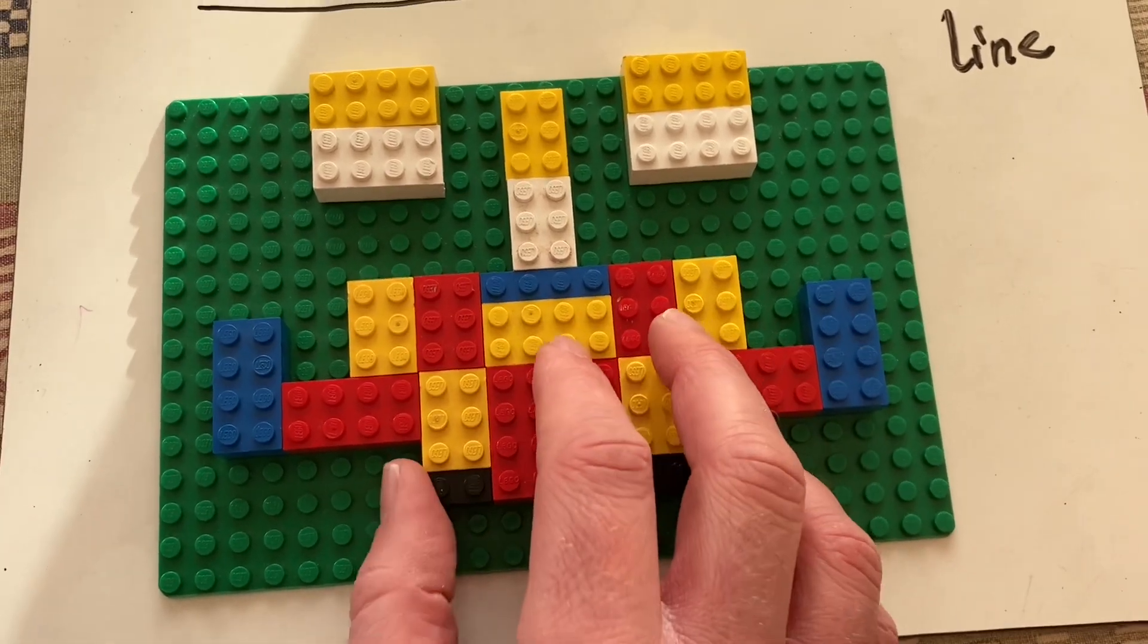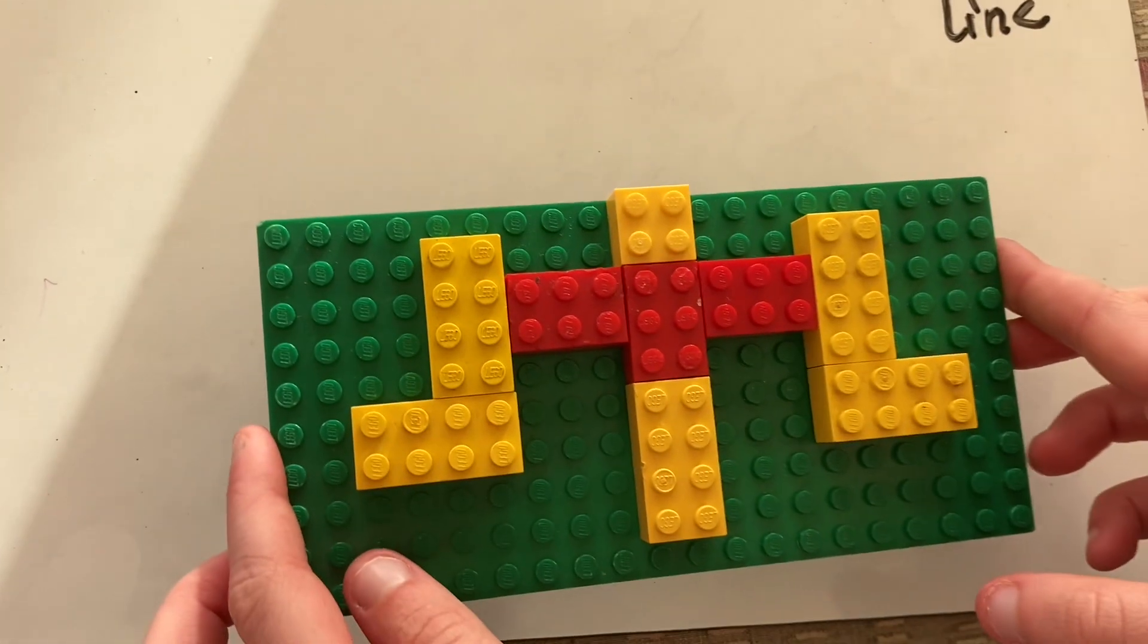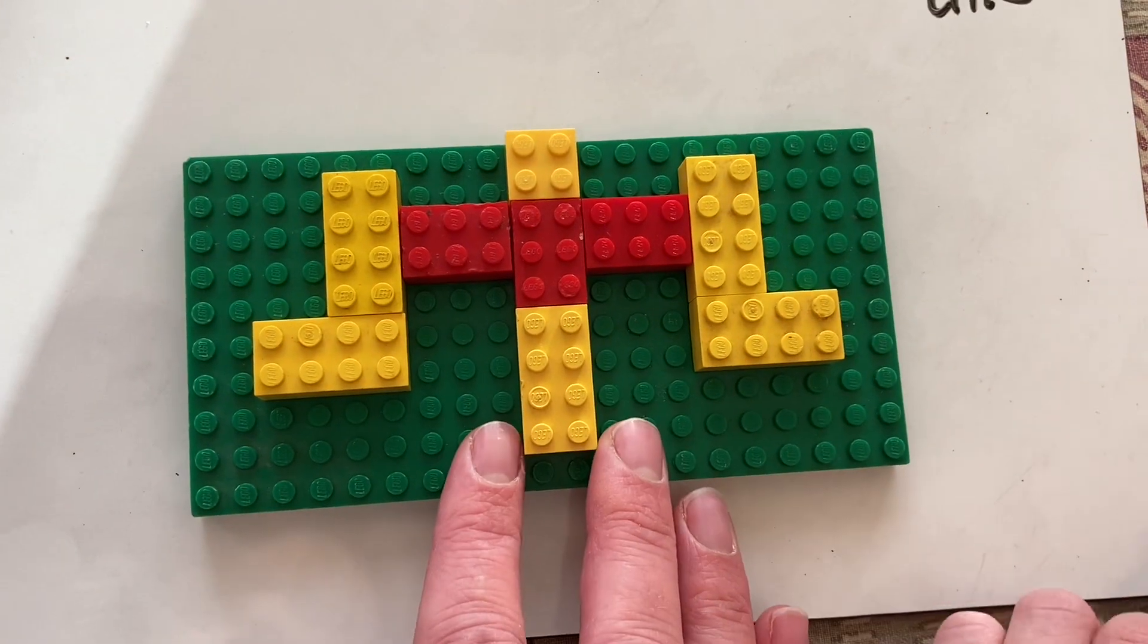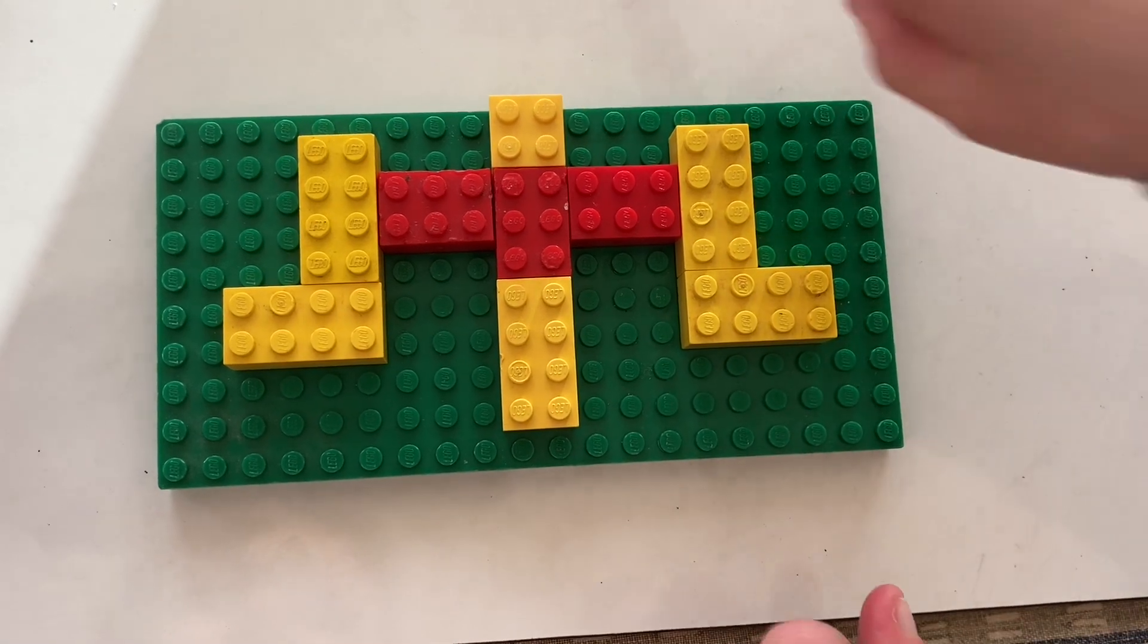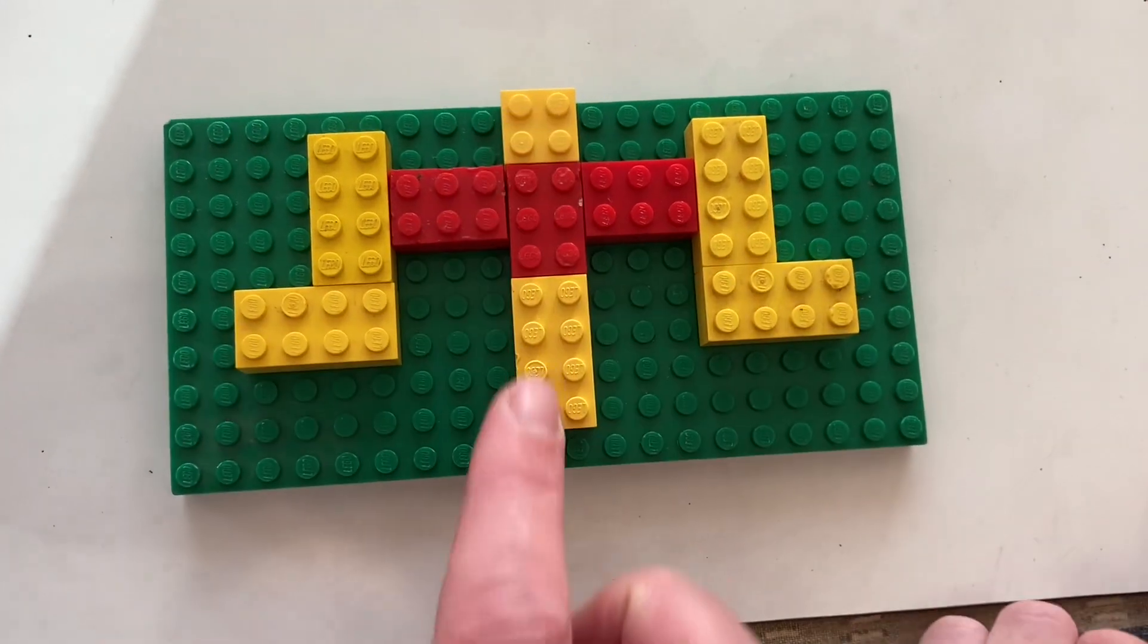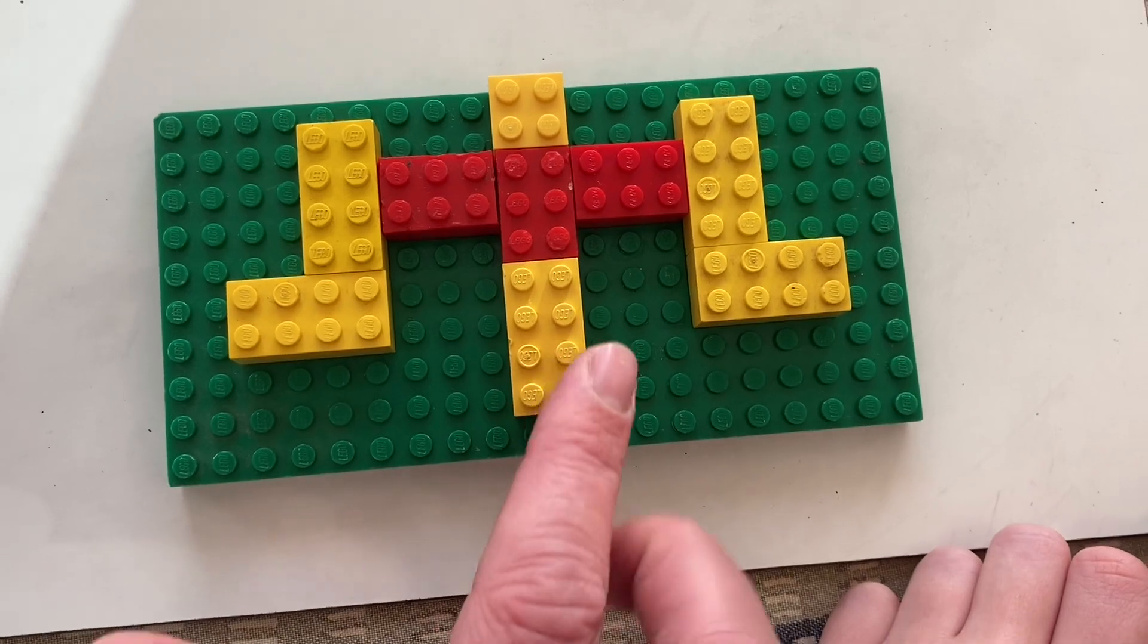Right, do we have another example of that? Yes, we do. Another Lego creation. Okay, and where has that got a line of symmetry, a mirror line? Again, down the middle. Down the middle, it's got its mirror line there.